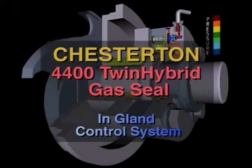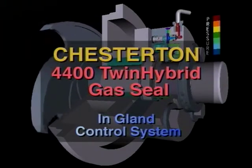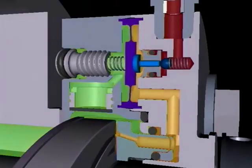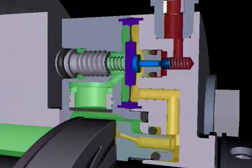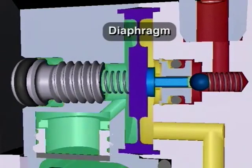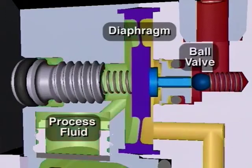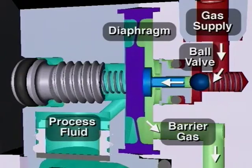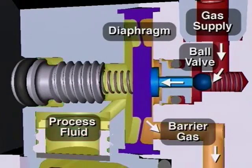The Chesterton in-gland control system regulates barrier gas pressure within the seal itself without external pressure regulators. The IGCS uses a diaphragm mechanism to detect changes in the process pressure. The movement of the diaphragm controls an internal valve that regulates how much barrier gas is supplied to the faces, so that the pressure differential between process and barrier can be maintained.